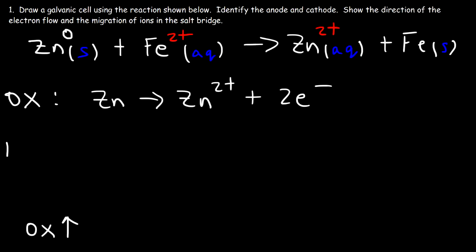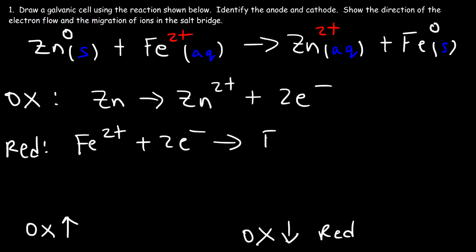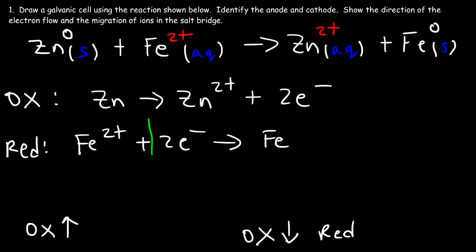The other half reaction must be reduction. The oxidation state of any pure element in its natural state is zero, so Fe changes from two to zero — the oxidation number is decreasing, which is associated with reduction. So Fe 2+ acquires two electrons turning into Fe solid metal. Anytime the electrons are on the right side it's an oxidation half reaction; if the electrons are on the left side it's a reduction half reaction.